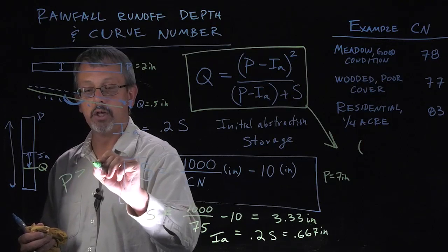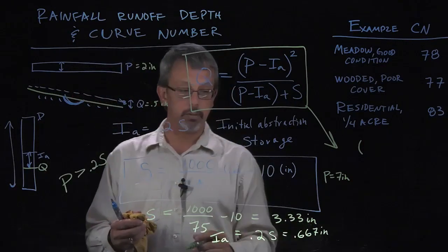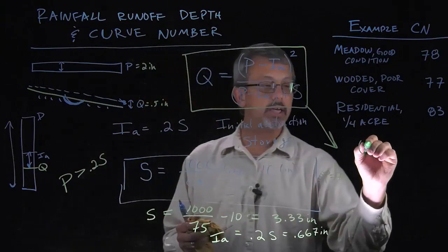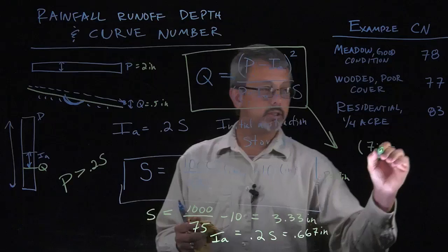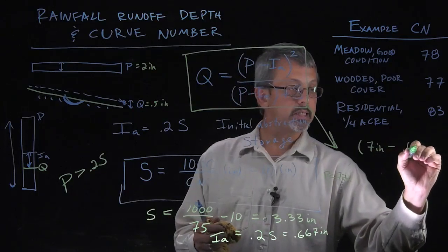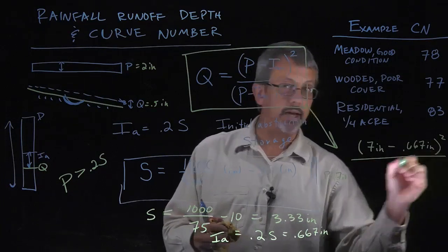Precipitation must be greater than 20% of the storage. In this case, it is. The storage is 3.33 inches. So we'll take the precipitation of seven inches. We'll subtract the initial abstraction of 0.667 inches. We square that value.